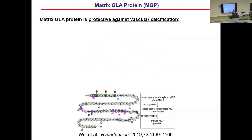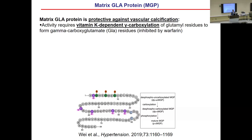What is matrix GLA protein, or MGP? MGP is one of the strongest endogenous inhibitors of vascular calcification — it's protective. It's only 84 amino acids long and looks very similar in structure to parathyroid hormone. There are five glutamic acid residues along this structure that provide the activity of MGP. These five glutamic acid residues become gamma-carboxylated, and that gamma-carboxylation is required for the protective effect of MGP against vascular calcification. This process requires a gamma-carboxylglutamase enzyme that is vitamin K-dependent. So vitamin K is required for the activity and function of MGP. Without vitamin K, you have inactive MGP and are more prone to develop vascular calcification.